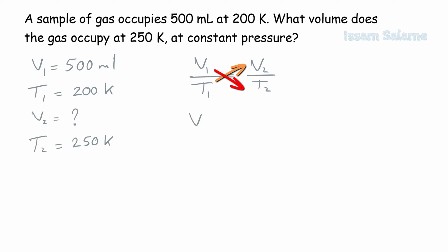To find V2, we do cross multiplication. V2 equals V1 times T2 over T1.